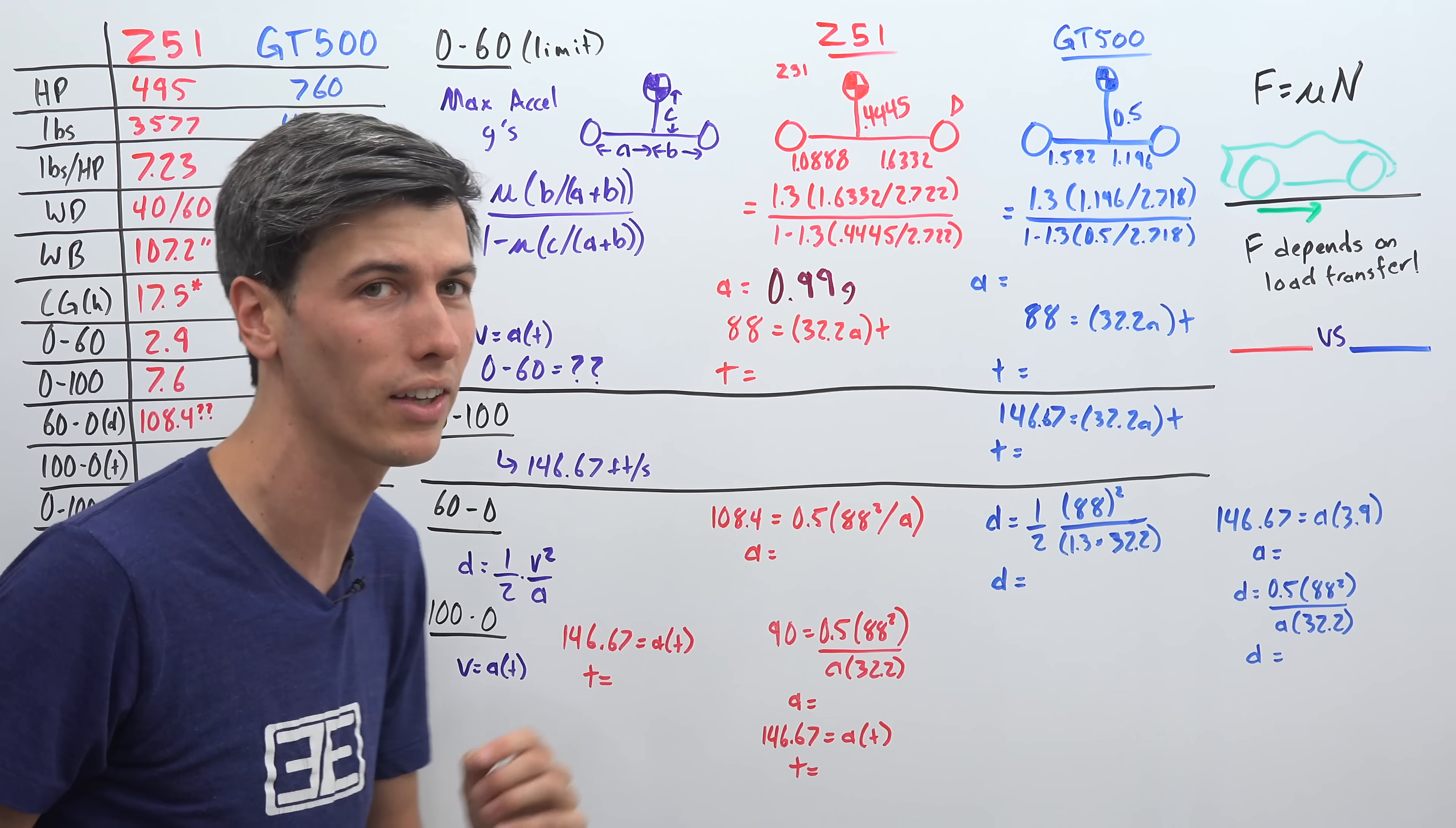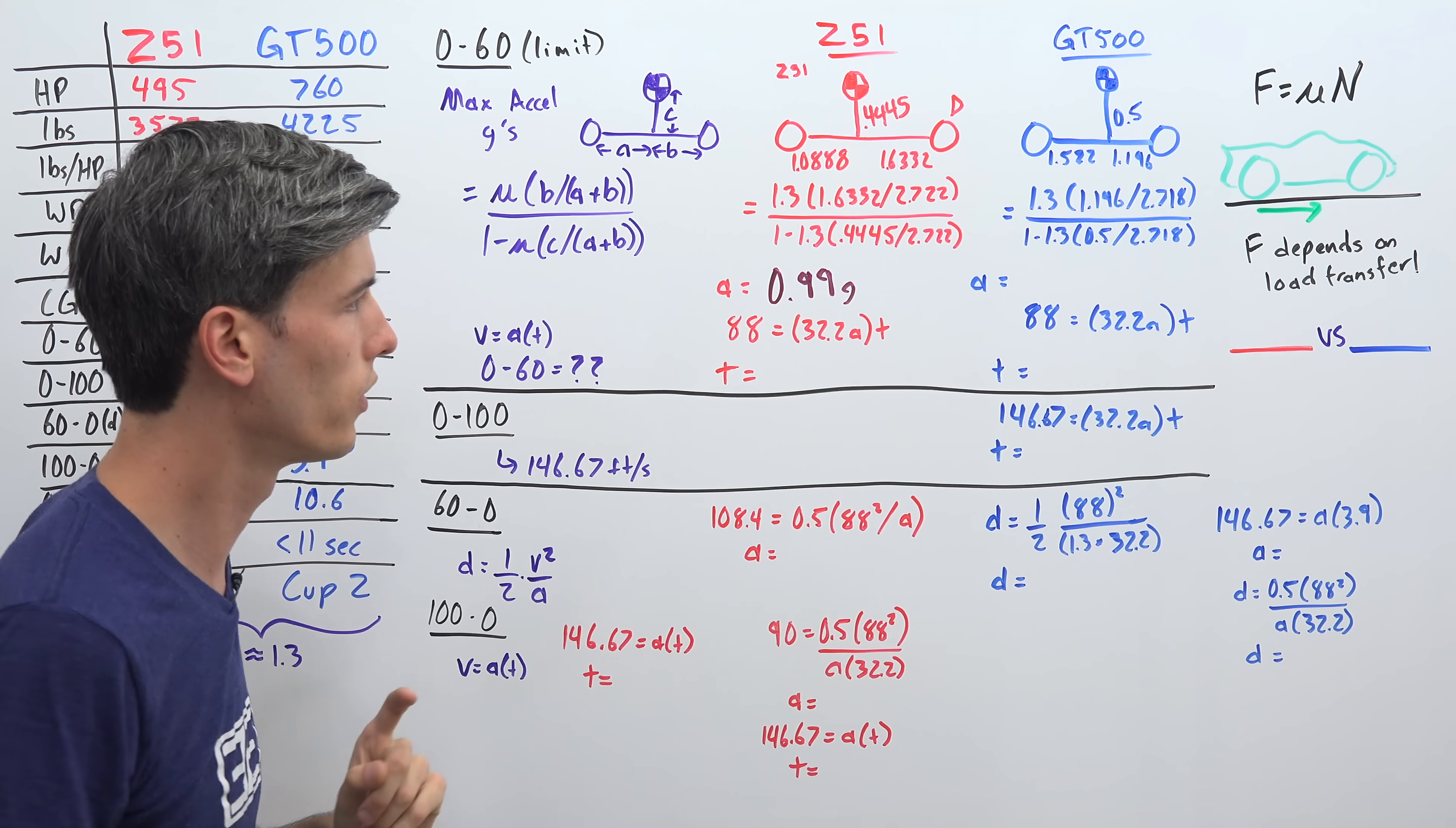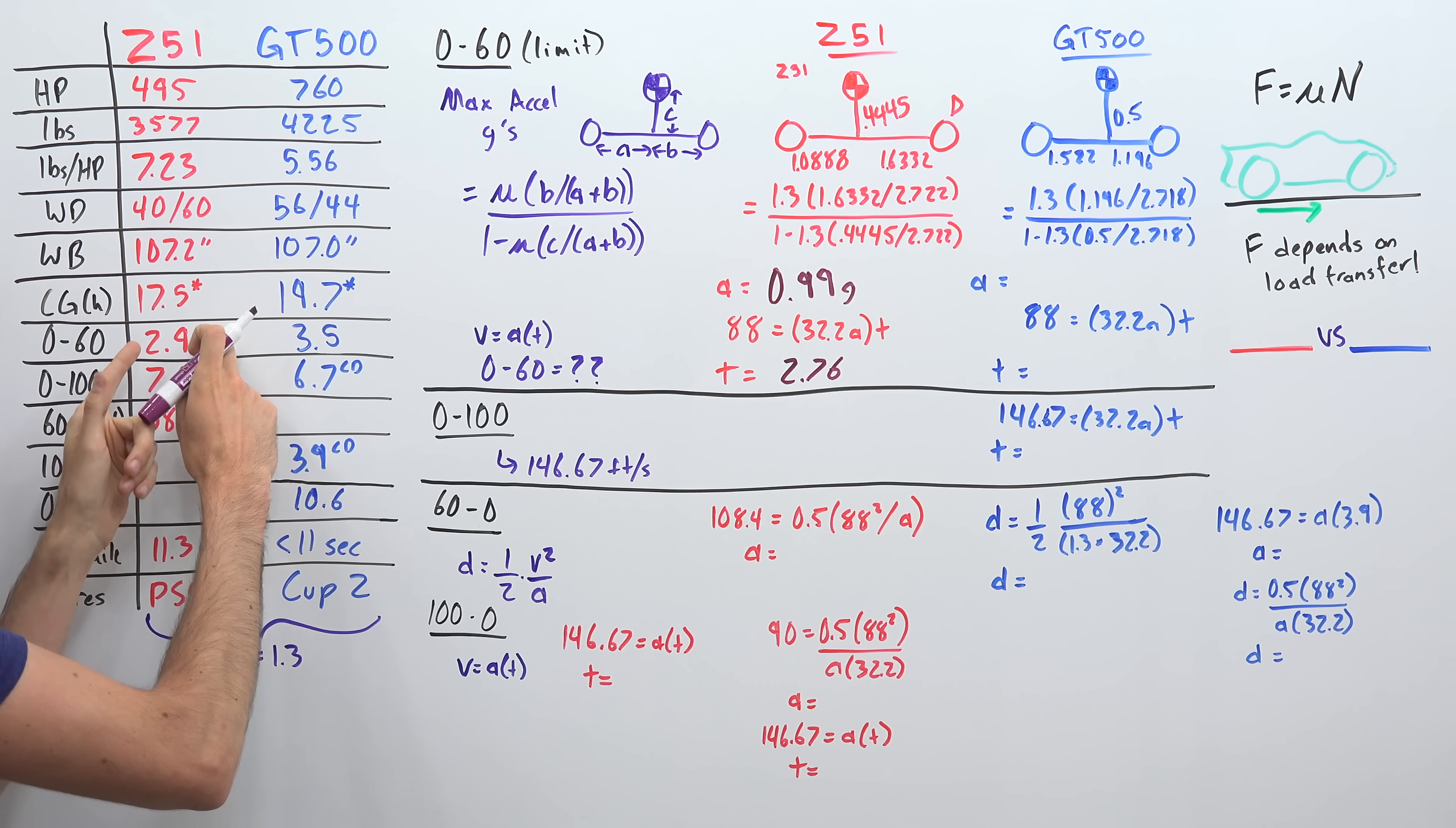And so if you plug in the numbers for the Corvette here, we get 0.99 g. So almost capable of accelerating at 1 g, which is very impressive using those 1.3 coefficient of grip tires. And then we can use the equation velocity equals acceleration times time to find our theoretical 0 to 60 limit, which is 2.76 seconds. So as you can see grip is actually not the limiting factor in the Corvette's 0 to 60 time. It is probably power on that top end of that 60 miles per hour where it starts to run out. So it could be a little bit faster if it had more horsepower.